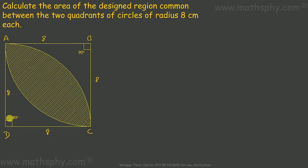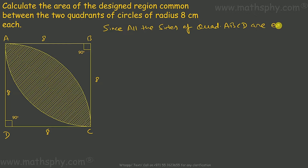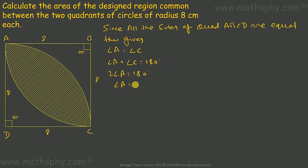The opposite angles are 90 degrees. Since all the sides of quadrilateral ABCD are equal, this gives angle A equals angle C. Angle A plus angle C would be 180, so I can write 2 times angle A equals 180. Therefore angle A is 90 degrees, and angle C is also 90 degrees.